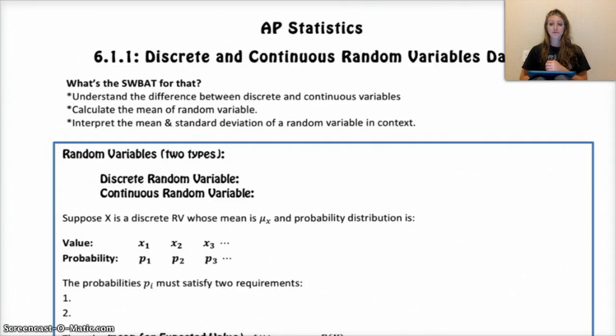Today we're going to talk about the difference between discrete random variables and continuous random variables, what the difference is between them, and also find the mean of a random variable. And then we're going to interpret the mean, not the standard deviation because we do that in the next video, but interpret the mean of a random variable in context.